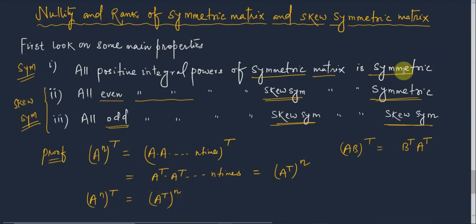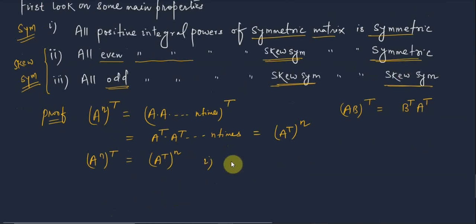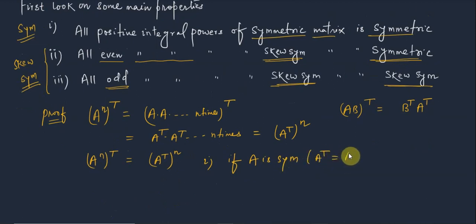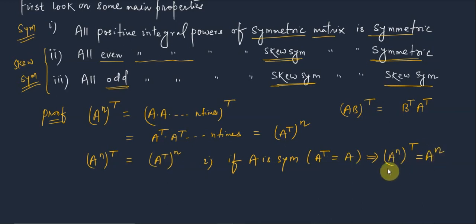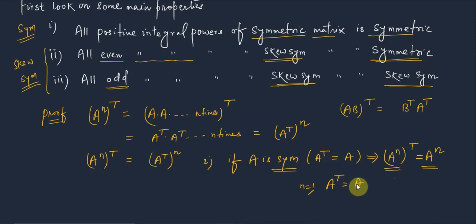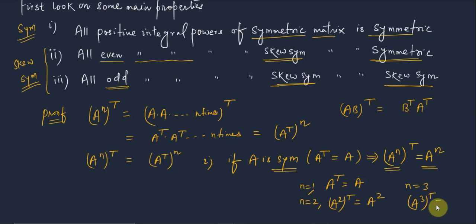Now, talking about the first property: if A is symmetric, then A^T = A. This means (A^n)^T = (A^T)^n = A^n. So every integral power of a symmetric matrix is symmetric. For n=1, A^T = A (symmetric). For n=2, (A²)^T = A² (symmetric). For n=3, (A³)^T = A³, and so on.